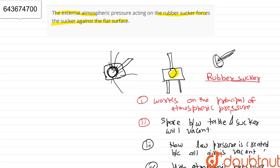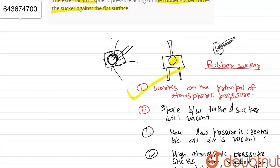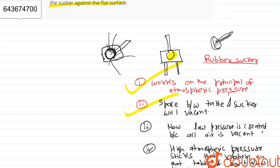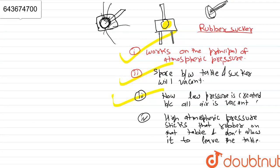So these are the four basic points of the working of the rubber sucker. First, works on the principle of atmospheric pressure. Second, space between the table and sucker will become vacant. This creates the low pressure inside that vacant space, and that high atmospheric pressure now tries to stick that rubber on that table and do not allow it to leave the table.